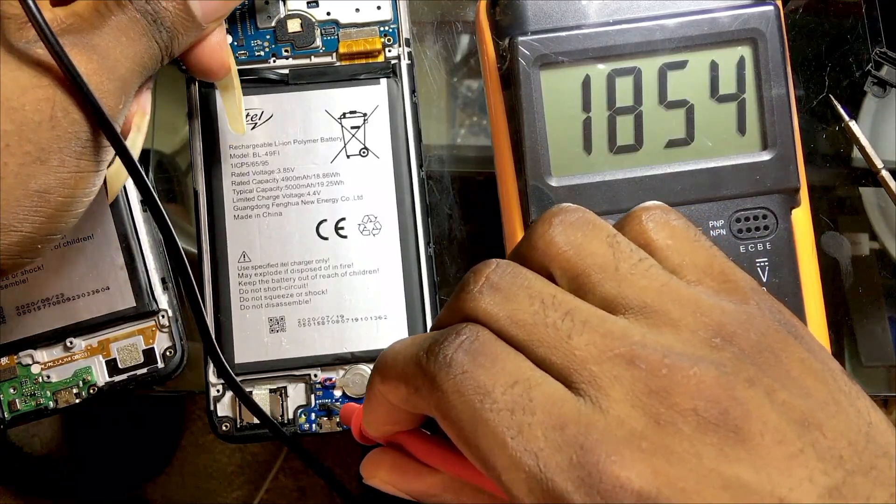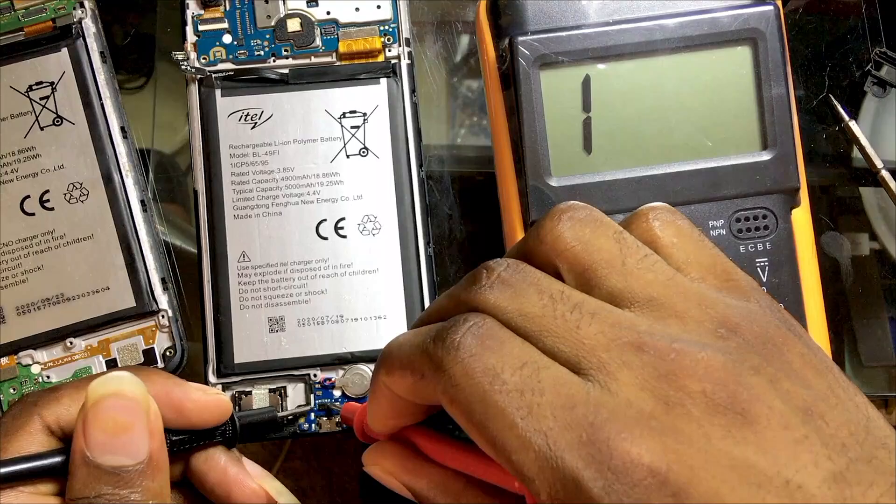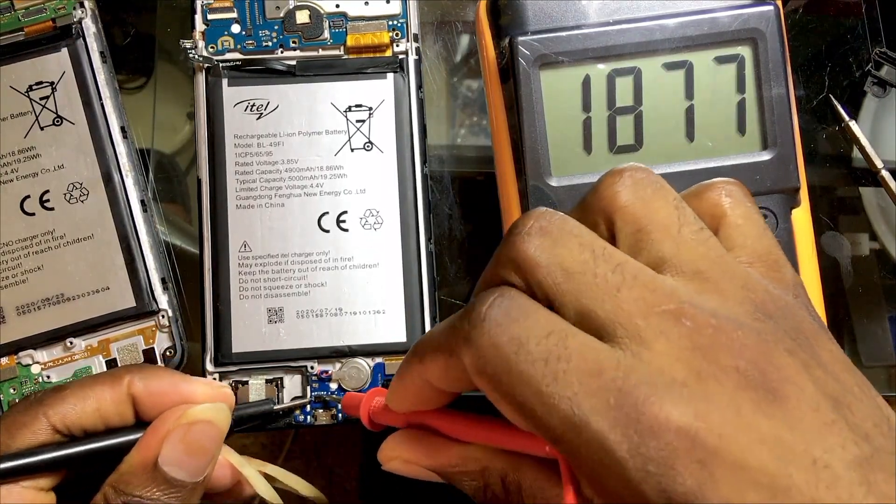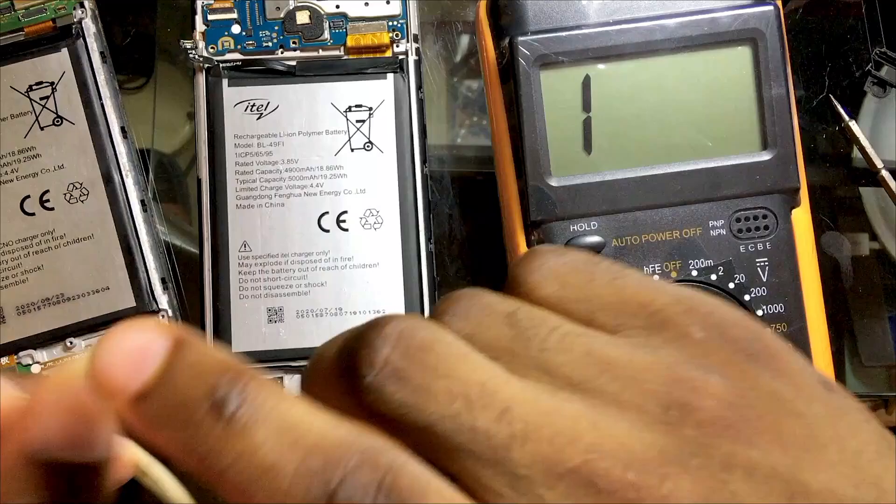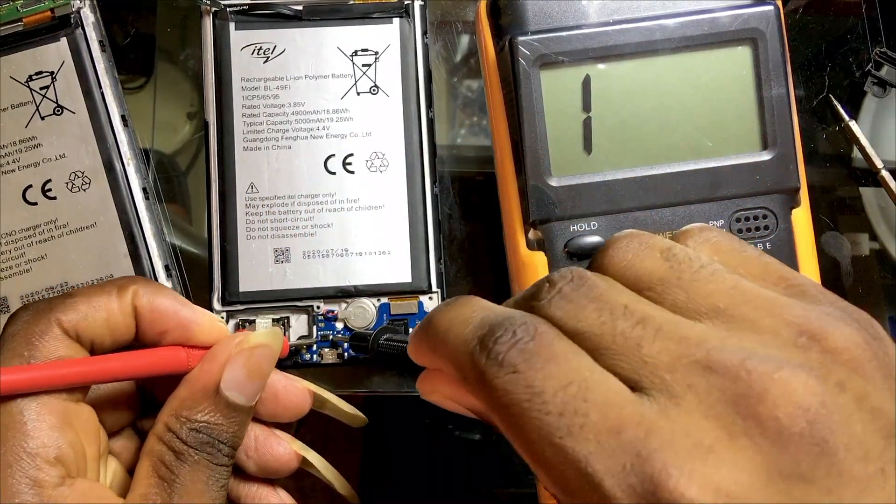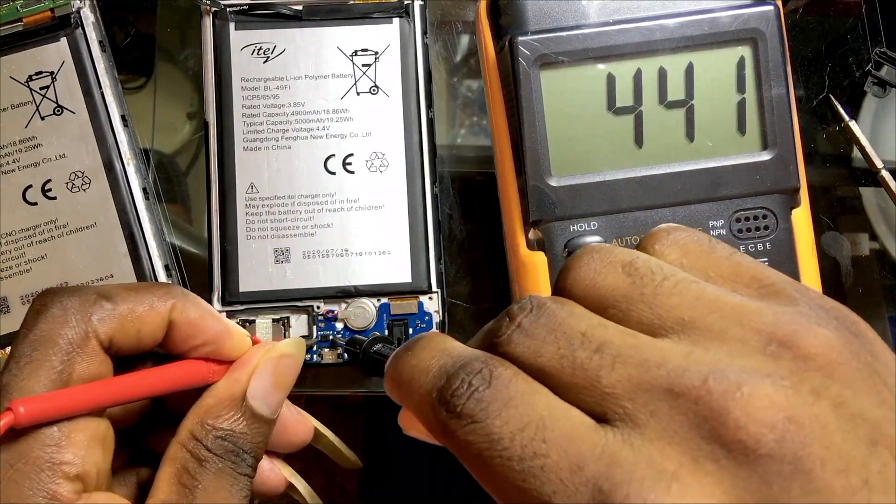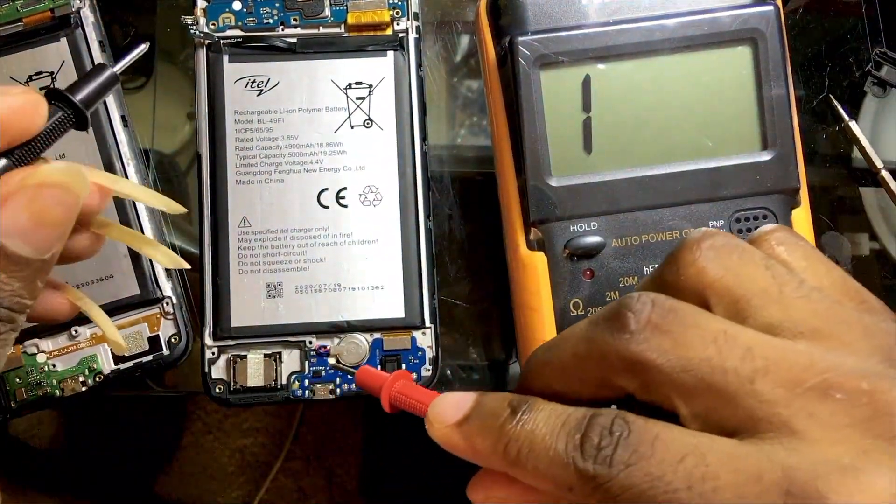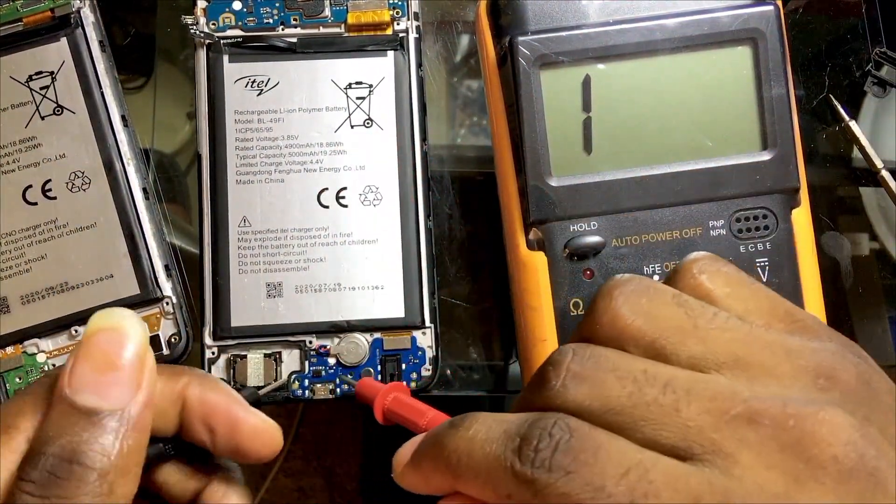Because it reads in both sides does not mean that it is bad. That is the mistake that most of us do. As you can see right here, if I change the sides it will still read. It does not mean that this diode is bad. You understand? This diode is not bad. As you can see, it's in the charging card right here.